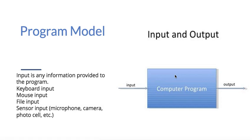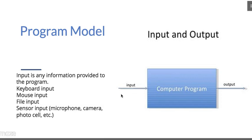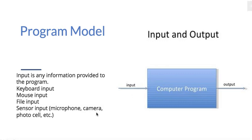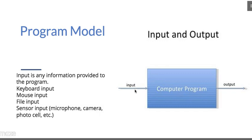In the source code, we have to use the user or computer to use the file. The inputs include keyboard, mouse, file, sensor, camera, and temperature, and then the instruction will be able to output the result. So this is the total computer program — this is the definition.